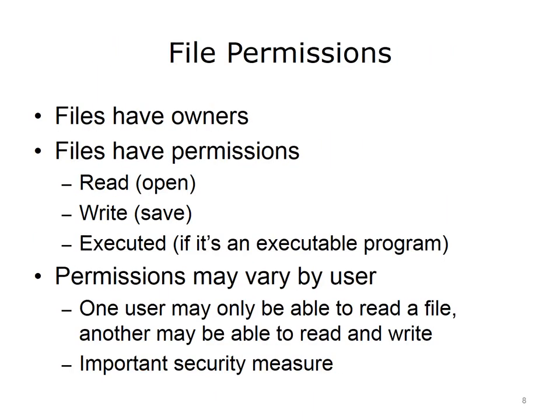Files have owners. Typically, the owner is the person who created the file or last modified it. Operating systems also have utilities to change ownership of a file. Not all operating systems store the file owner, particularly those operating systems that are simple and do not have extensive file security. Files also have permissions that specify what a user can do with the file, who can read the file, write to the file, and execute the file in the case of an executable program. Permissions are an important security feature since they protect files from unauthorized access.